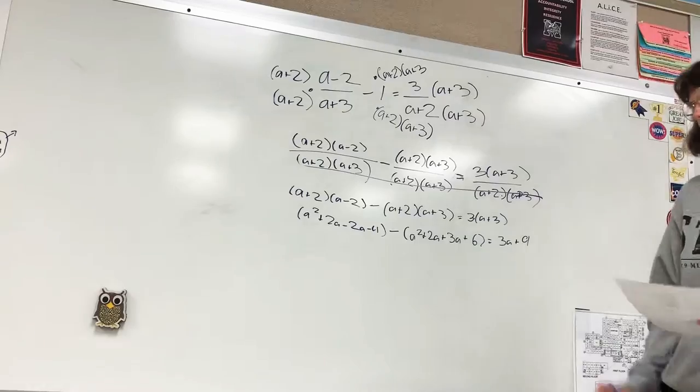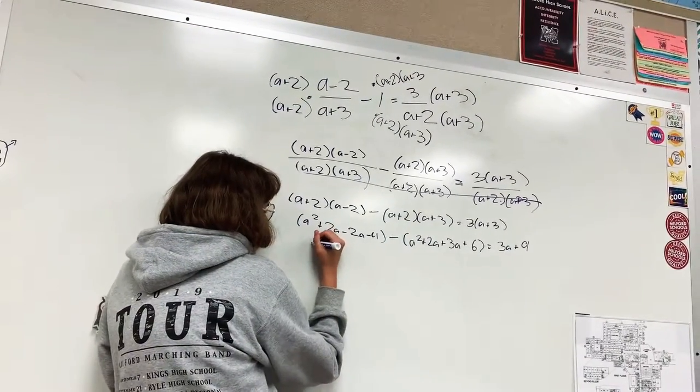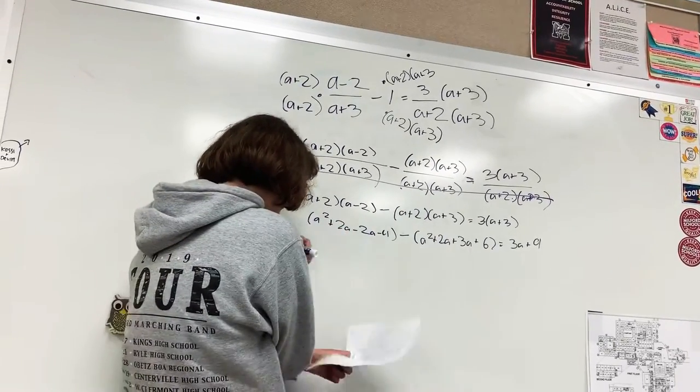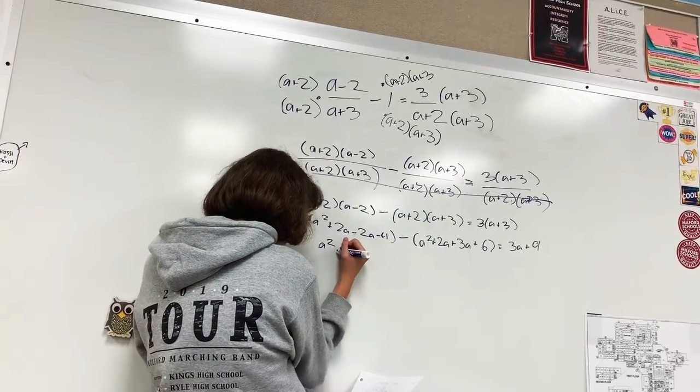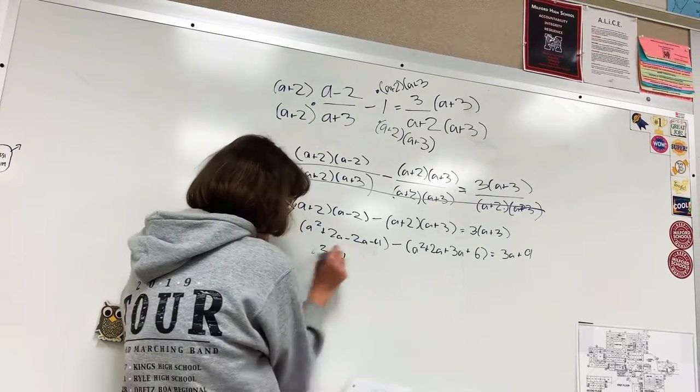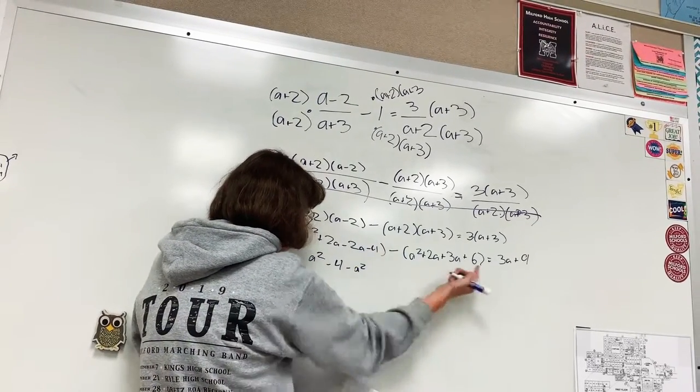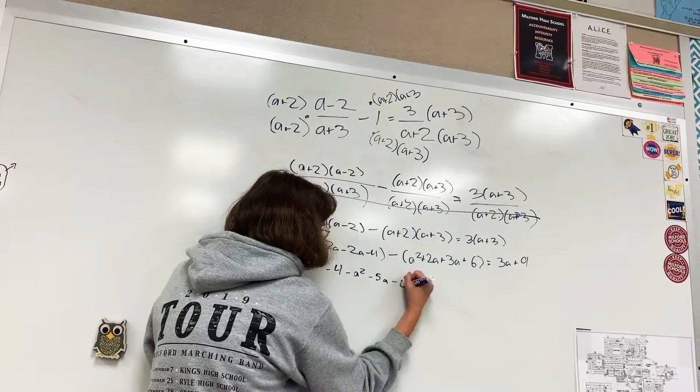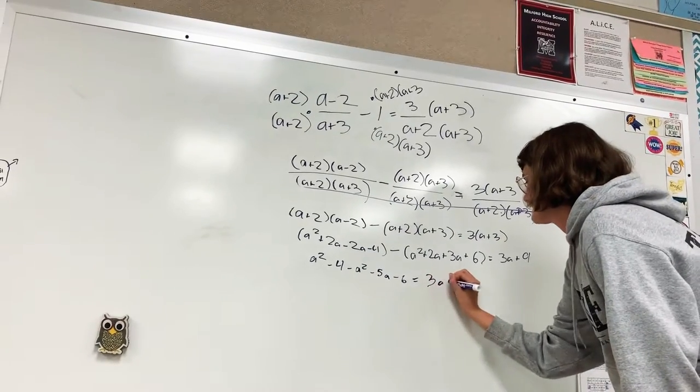And then, so now what you're going to do is combine like terms. So you end up with the entire equation on this side as a² minus 4, because that just cancels each other out, minus a² minus 5a minus 6. And now this is equivalent to 3a minus 9.